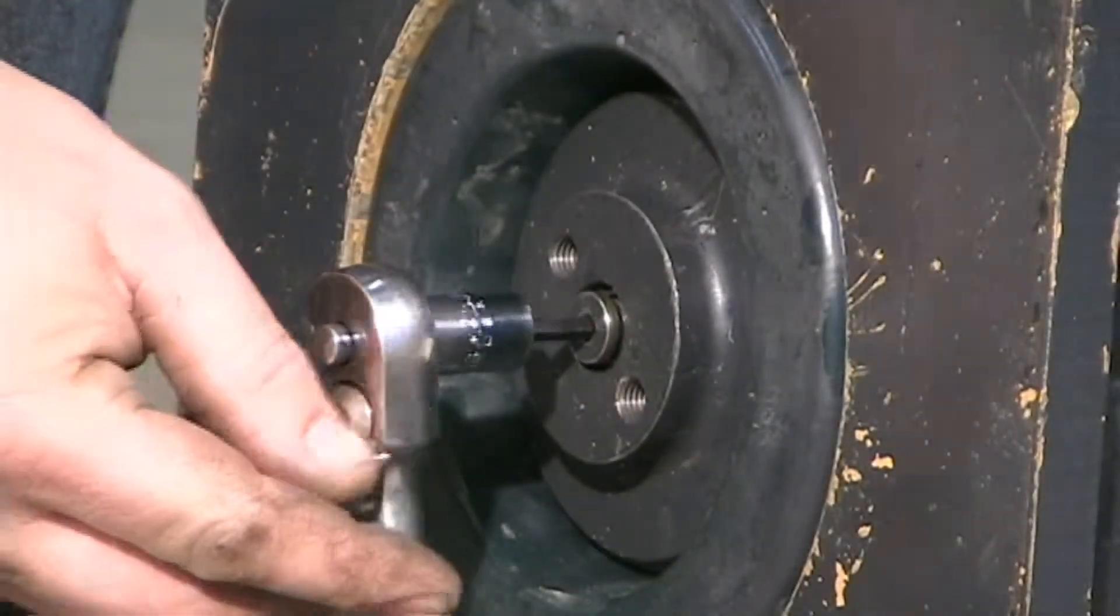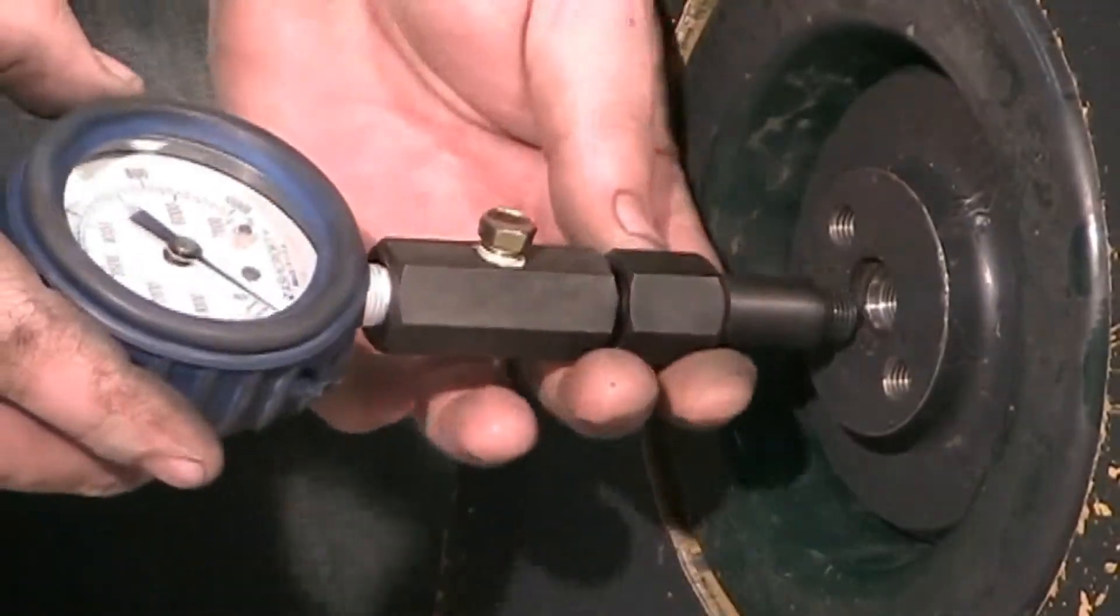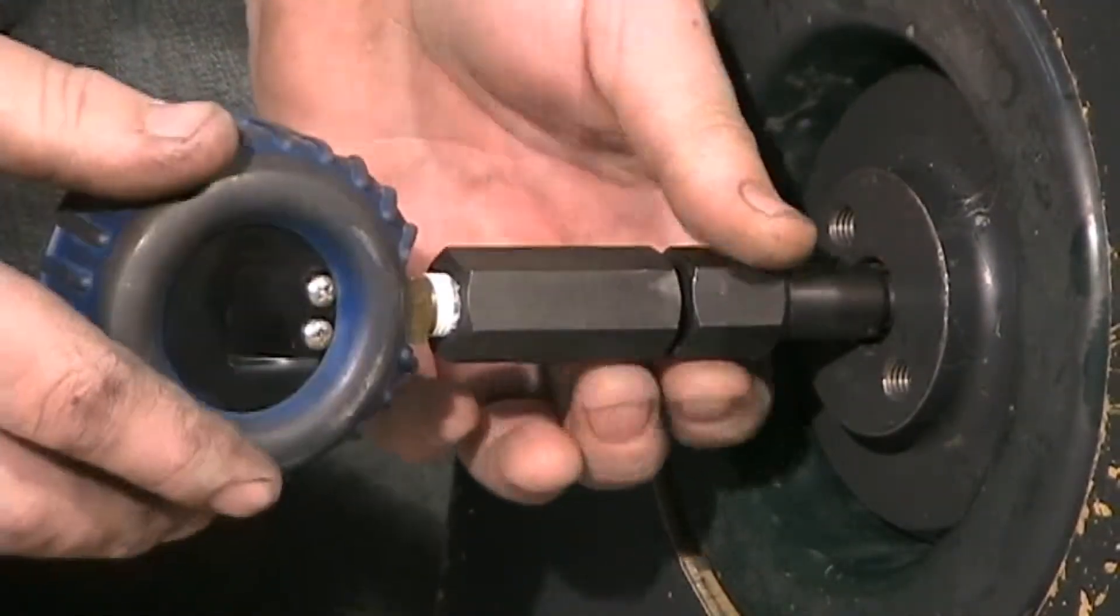Remove the plug from the breaker so the nitrogen charge port is accessible. Finally, install the pressure gauge on the breaker by tightening the adapter.